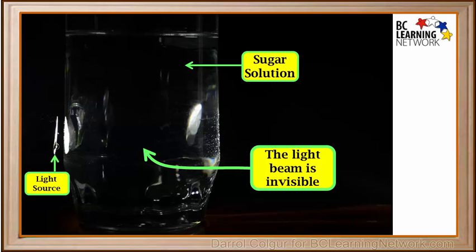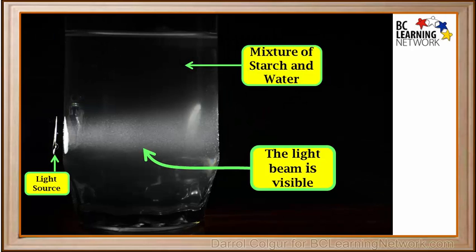Now we'll replace the solution with a heterogeneous mixture of starch and water. Starch does not dissolve in water and instead of a solution forms a heterogeneous mixture. Notice when the light beam passes through a heterogeneous mixture, the beam is visible as it passes through the mixture.